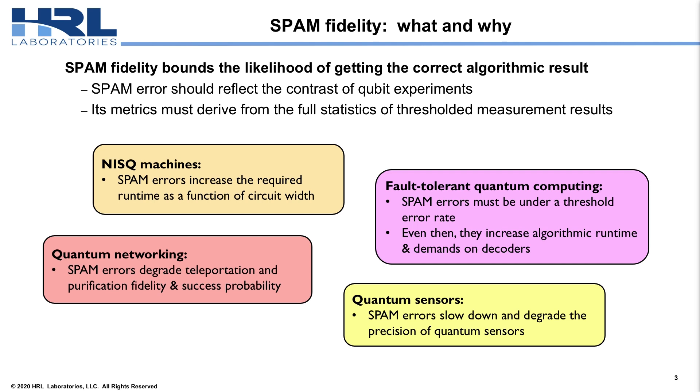Why do we care about spam fidelity? Well, anyone who cares about qubits probably cares about spam fidelity. If you're making a NISQ machine, as your circuit gets wider, your run time is going to increase very quickly with spam errors. If you're into quantum networking, your teleportation and purification protocols are going to depend very strongly on the quality of your measurements. Of course, in fault-tolerant quantum computing, you have to be underneath a certain threshold rate. And you'd like to be really quite far underneath that threshold. And lastly, if you're doing quantum sensing, spam errors will also slow down and degrade the precision of your quantum sensors. So, everybody who cares about qubits should care about spam.